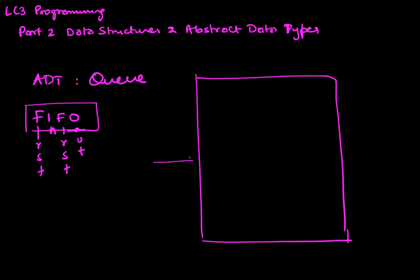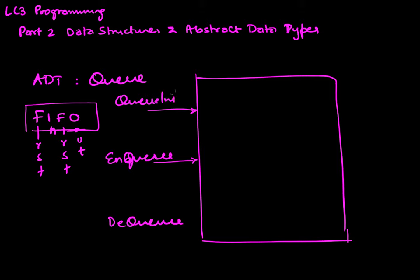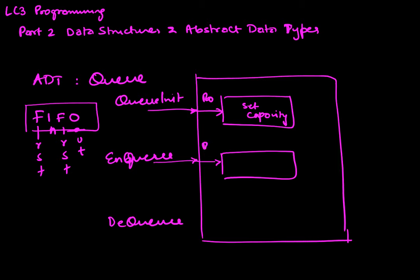The operations we're going to perform are NQ and DQ, and we're going to have a Q_init to initialize our Queue. The Q_init function takes a single input R0, which sets the capacity of our Queue. The NQ function takes a single element in R0 and returns in register R5 whether it was a success or failure — success is 1 and failure is 0.